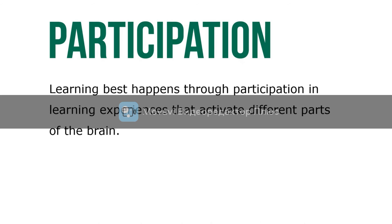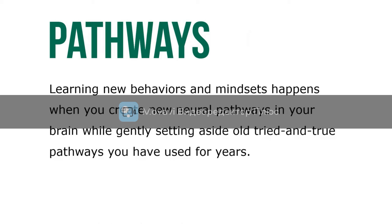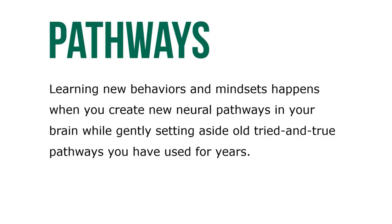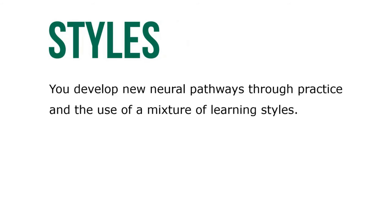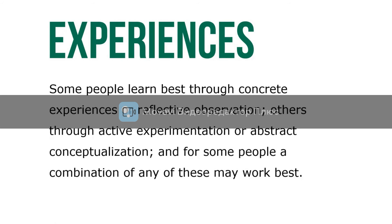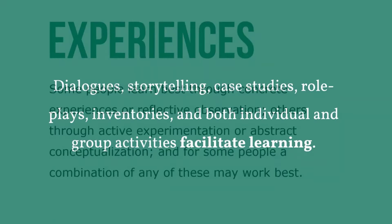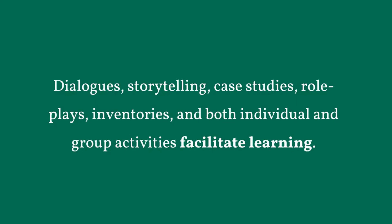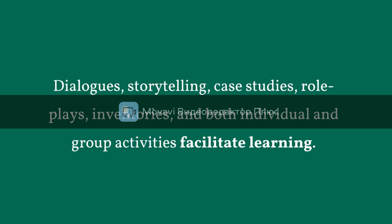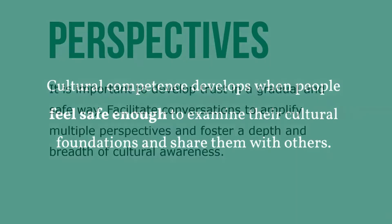Learning new behaviors and mindsets happens when you create new neural pathways in your brain while gently setting aside old ones. You develop new neural pathways through practice and a mixture of learning styles. Some people learn best through concrete experiences or reflective observation; others through active experimentation or abstract conceptualization. Dialogues, storytelling, case studies, role plays, inventories, and both individual and group activities all facilitate learning.